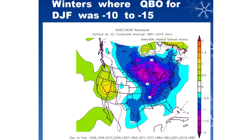Hello guys and welcome to my second episode of Winter Thoughts for this year. It's been a couple months since we made our last one. Today we're going to be talking about the QBO, an oscillation that really seems to affect the temperatures of winter and lead to either very cold winters or very warm winters. Last winter it pointed towards a warm winter, and that is what happened, so you can see there is some really good proof behind this oscillation actually having a big effect on winter.